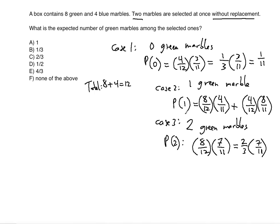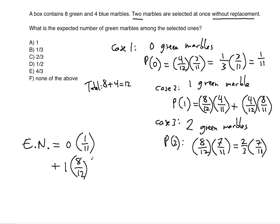Now that we've found the individual probabilities, to find the expected value we multiply the probabilities of individual cases by their respective values. The expected value equals 0 green marbles times its probability 1 over 11, plus 1 green marble times its probability 8 over 12 times 4 over 11 — combined by multiplying by 2 since both orderings give the same probability — plus 2 green marbles times its probability 2 over 3 times 7 over 11.